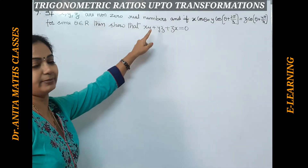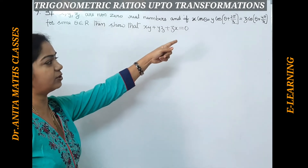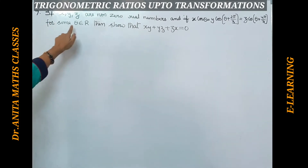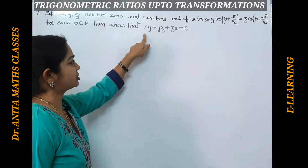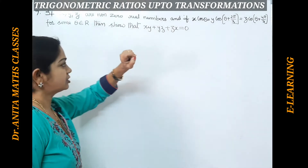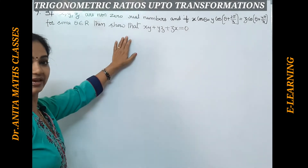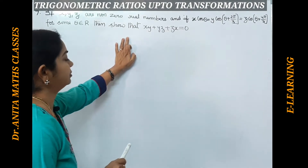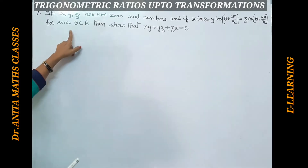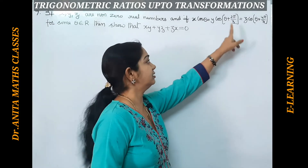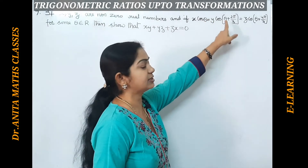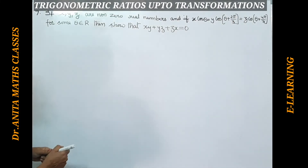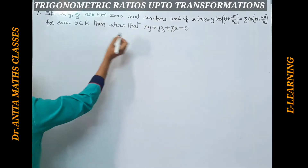7th problem: x, y, z are non-zero real numbers, and if x cos θ equals y cos(θ + 2π/3) equals z cos(θ + 4π/3) for some θ belonging to R, then show that xy + yz + zx equals 0. There is a similar problem in section 2. The similarity here is that cos θ + cos(θ + 2π/3) + cos(θ + 4π/3) equals 0, which we need to use.